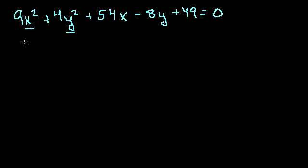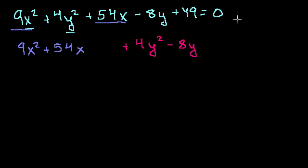The x terms are 9x² + 54x. And let's do the y terms in magenta. So then you have + 4y² - 8y. And then you have this + 49 = 0.